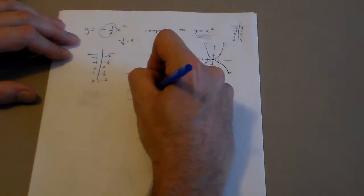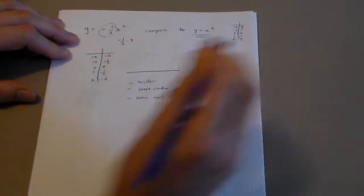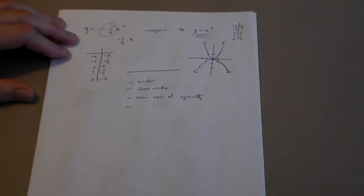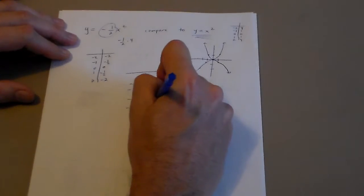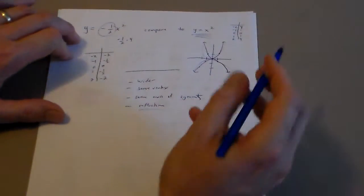same axis of symmetry, and then it's going to be a reflection, because this one opens up, this one opens down, which means it's a reflection.